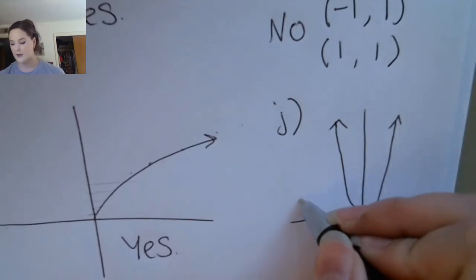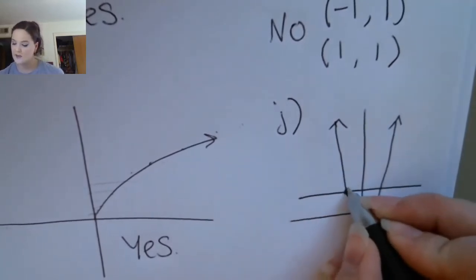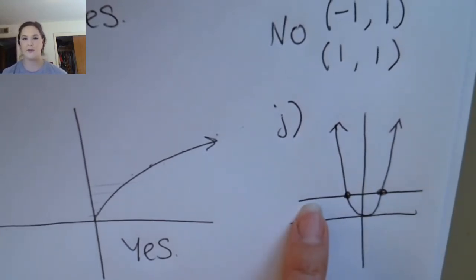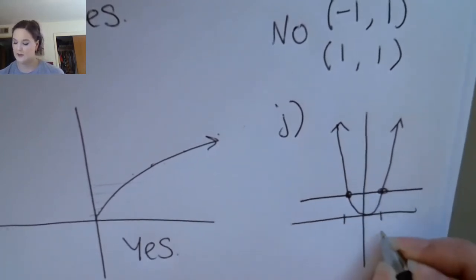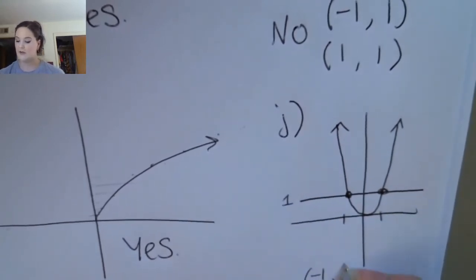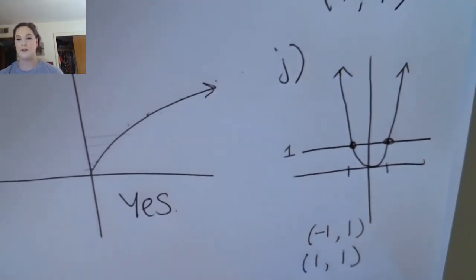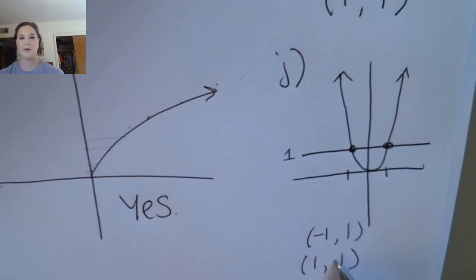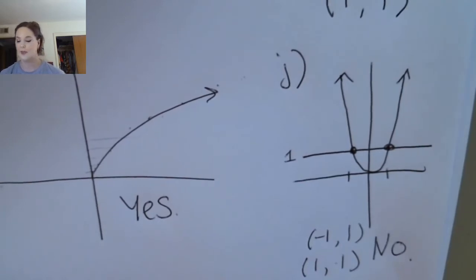For the second graph, these two x values have the same corresponding y value. We would mark these as points: negative one, one and positive one, one — the same situation as before, where you have two different x values with the same y value. That means this is not one-to-one.